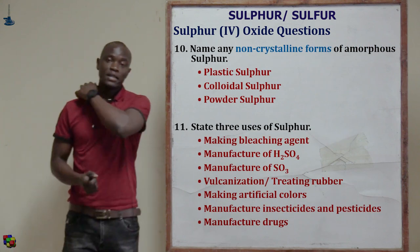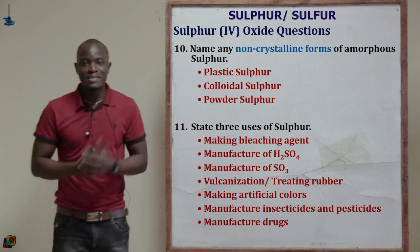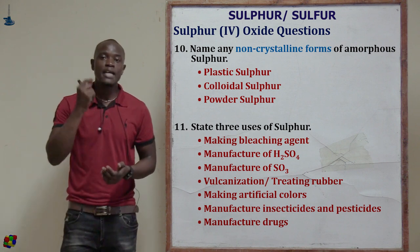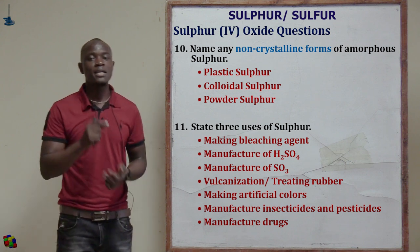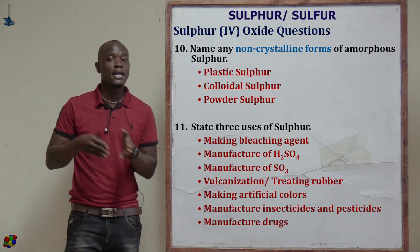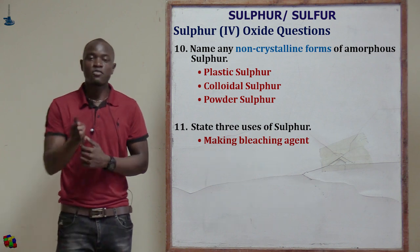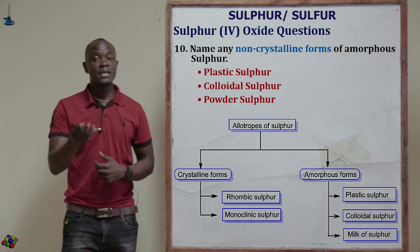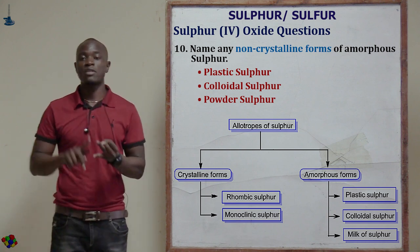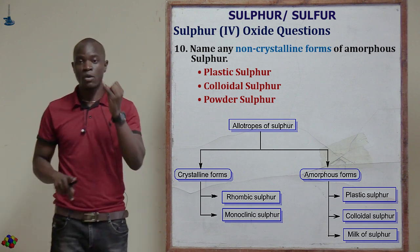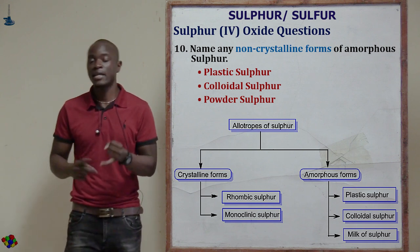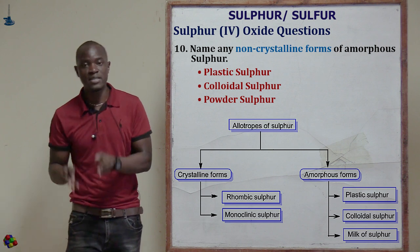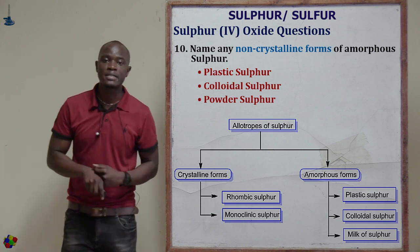Question ten asks: name any non-crystalline forms of sulfur. Note that this is a tricky question — it is asking for amorphous forms of sulfur. Sulfur is divided into crystalline (rhombic and monoclinic) and amorphous forms. The amorphous or non-crystalline forms of sulfur are: plastic sulfur, colloidal sulfur, and powder sulfur (milk of sulfur).